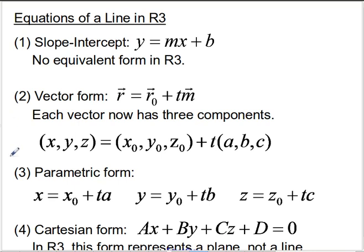On the other hand, the vector form is actually unchanged in the sense that it's going to continue to be the position vector is going to be equal to the initial position vector plus some scalar multiple of a direction vector. And I really should have included here that t is a member of the reals. That scalar multiple can take on any value, positive or negative, including zero.